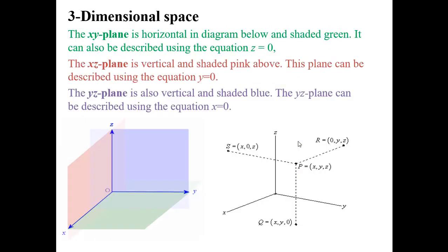There are more concepts regarding three-dimensional space. There are three coordinate planes: the first is the XY plane, the second is the XZ plane, and the third is the YZ plane. The XY plane is horizontal in the diagram and shaded green. The XZ plane is vertical and shaded pink. The YZ plane is the third plane, and all points on it have x-coordinate equal to 0, so its equation is x = 0.